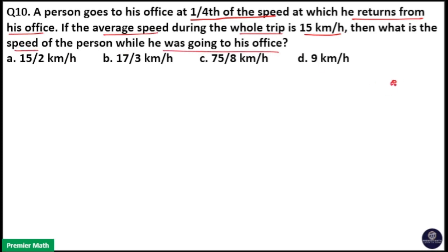If I take the returning speed of this person as 4x, that means while going to office he will take one-fourth of the returning speed, 4x. That means the speed at which he is going to office is x kilometers per hour.